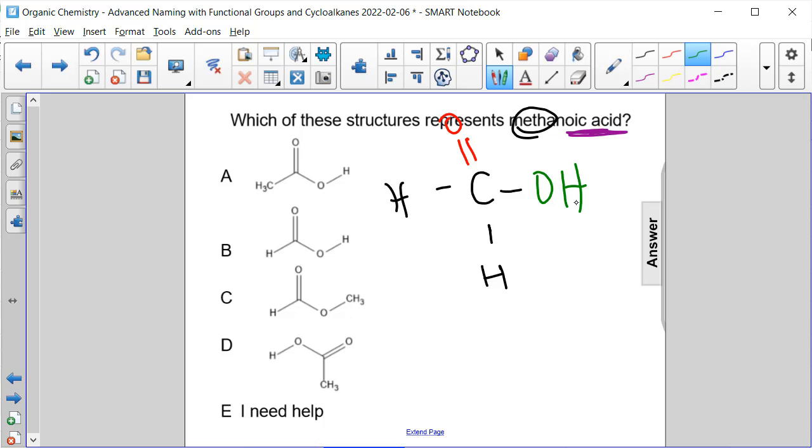Here's a carbon double bonded to oxygen, then OH. But see how this is a CH3 group here? It needs to be a hydrogen.